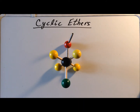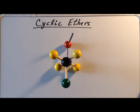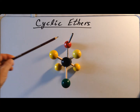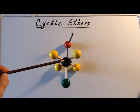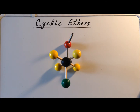Now, if the two substituents, the chlorine and the oxygen, are in an anti-configuration, the nucleophile is in the correct position for a backside attack in an SN2-type reaction.